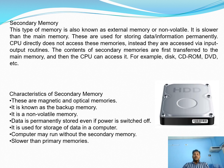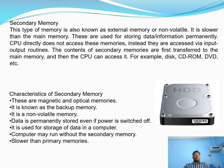Next we see about secondary memory. Secondary memory is also called external memory. It is non-volatile memory — it cannot be erased if power is switched off; it is a permanent storage device. It is slower than main memory. The speed depends upon the hard disk or whatever device you use. These are used for storing data and information permanently. The CPU does not directly access secondary memory; instead, it is accessed via input-output routines. The contents of secondary memory are first transferred to main memory, and then the CPU can access it.